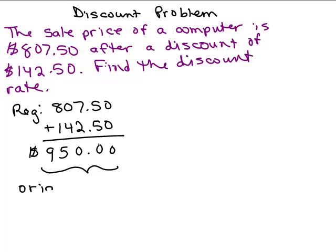Now, how do we get the discount rate? Remember, the discount rate, we're talking about the percent. And the original amount goes in the denominator, which is 950. And what goes in the numerator? Is it the sale price?